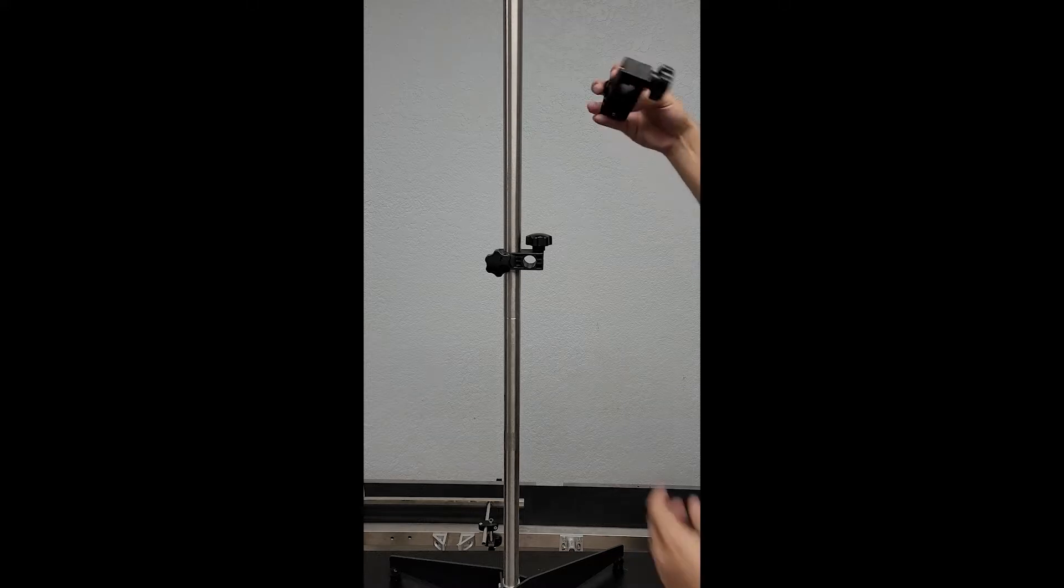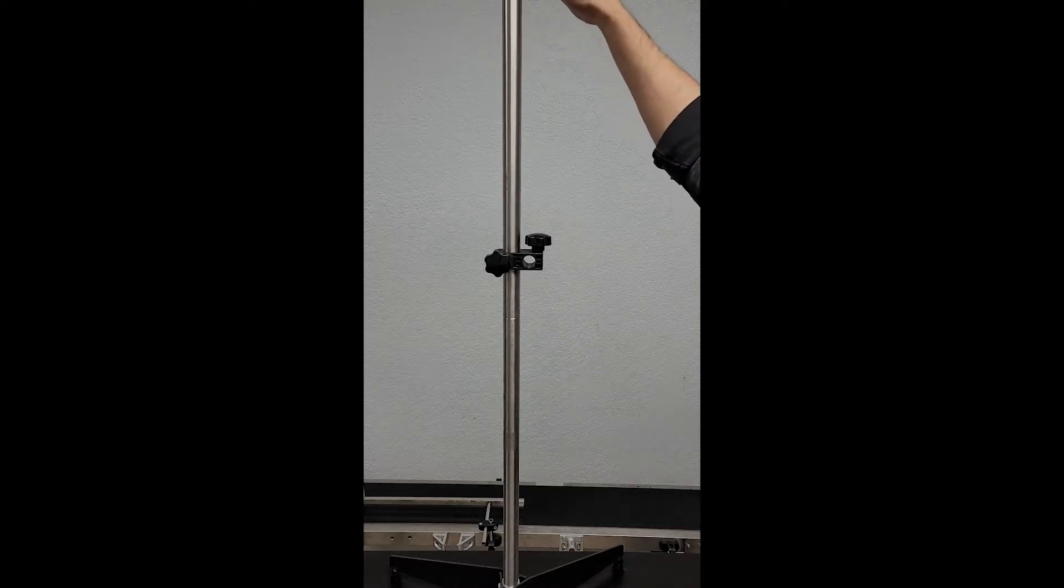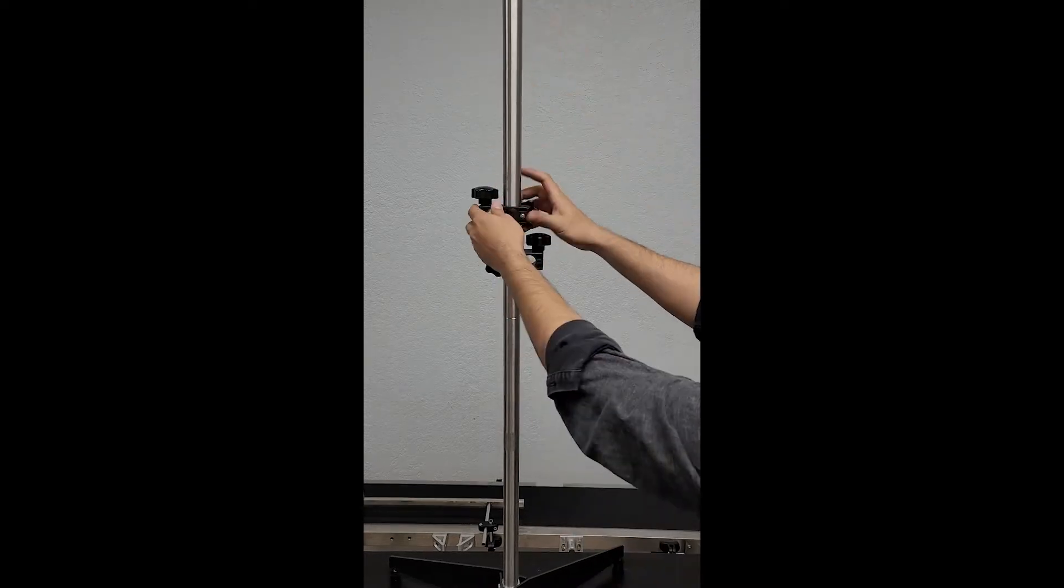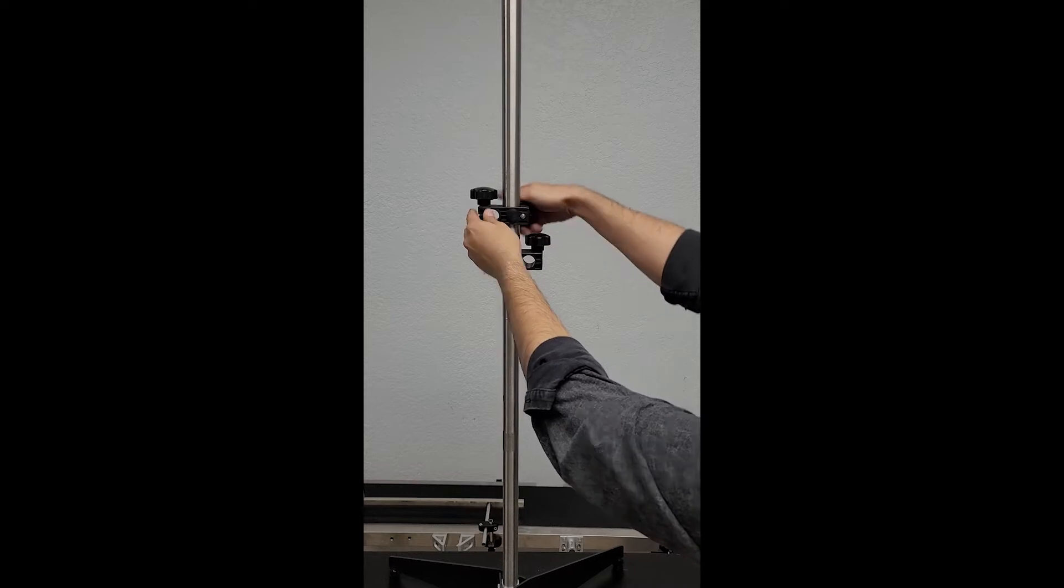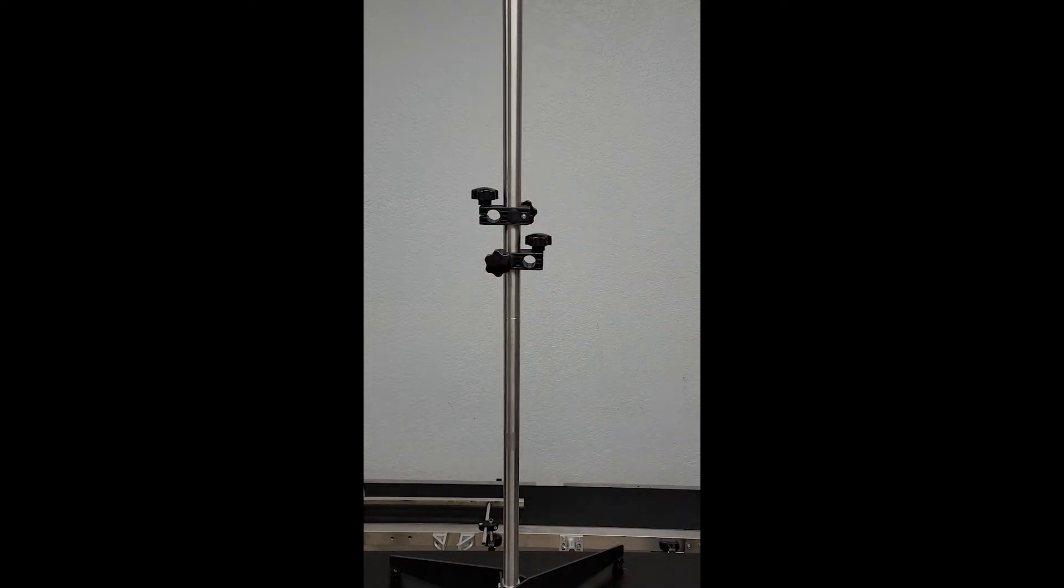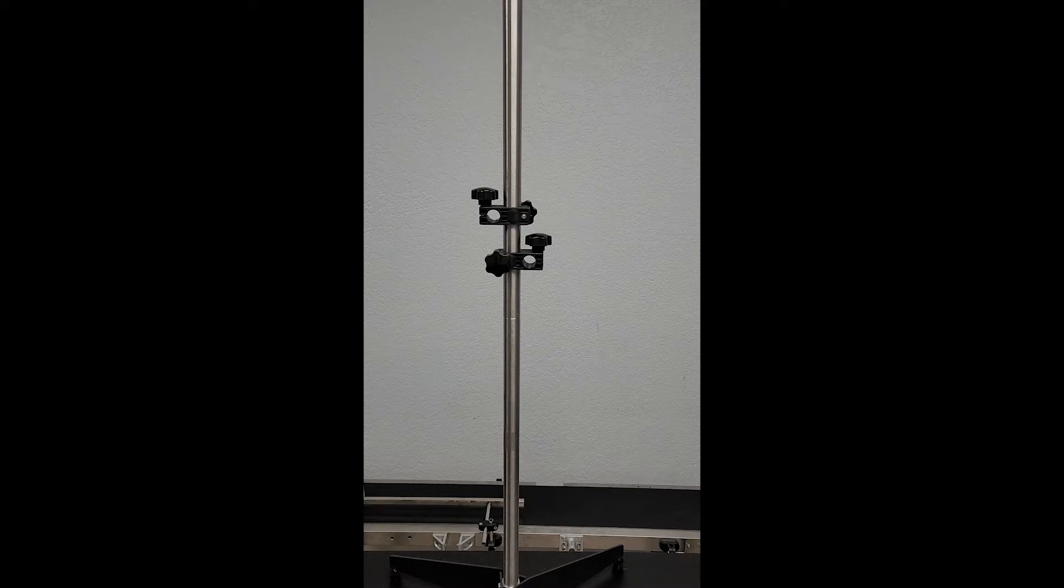Clamp on there. And the next step is going to be to take the two smaller bars and put them into the clamps here. Now the order in which you put them in, with which one is top or bottom, is really up to your preference. I like to put the photo eye underneath the printer, so that's what I'm going to do here.